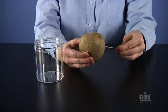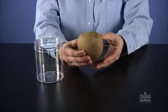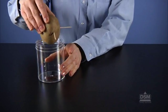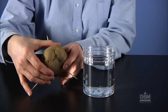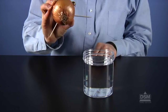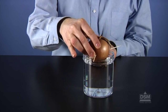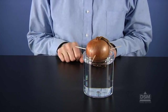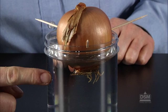Instruct them to insert the toothpicks into the potato or onion and suspend it over the jar. The potato should be positioned so that most of the buds are above the waterline. The onion should be positioned so that the root base of the onion is under water. Fill each team's jar with enough water to cover the bottom of the plant part. Then have students place their jars in a warm location out of direct sunlight.